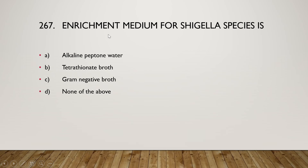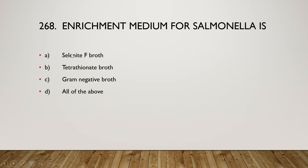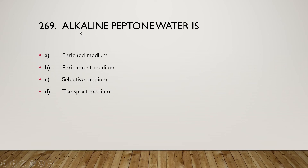The enrichment medium for Shigella species is alkaline peptone water, tetrathionate broth, gram-negative broth, or none of the above? The right answer is option C, gram-negative broth, developed by Hajna as an enrichment medium for recovery of Salmonella and Shigella from clinical and non-clinical specimens. The enrichment medium for Salmonella is selenite F broth, tetrathionate broth, gram-negative broth, or all of the above? The answer is option D, all of the above.